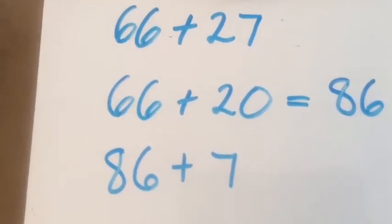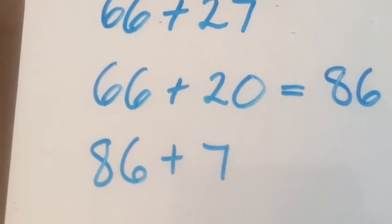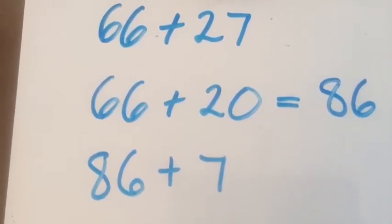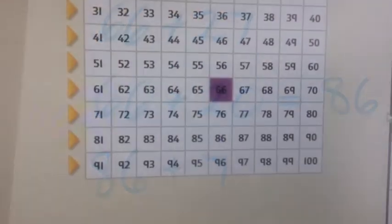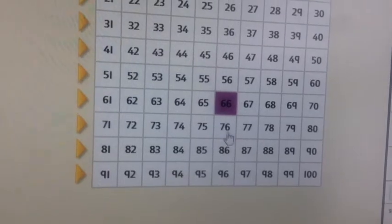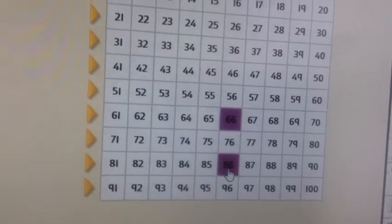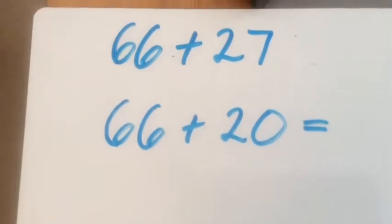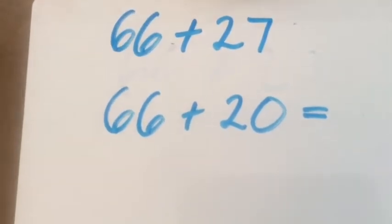Now that's the easy bit. You've now got to add seven, which is a little bit harder. Could we do some bridging to the next multiple of ten? Here we go then. Sixty-six add twenty, ten, twenty, eighty-six. So your first step should have been sixty-six add twenty.